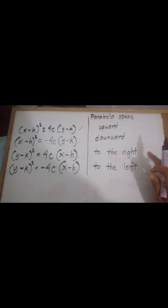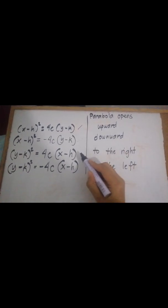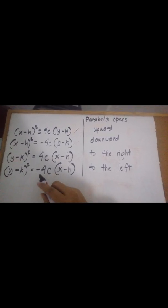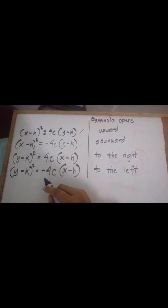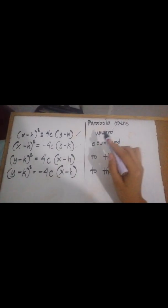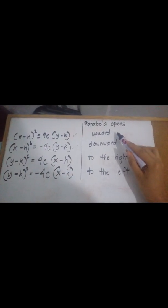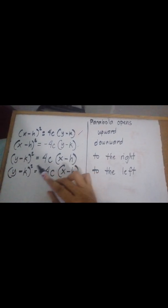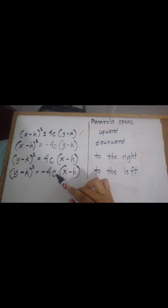If our parabola opens to the right, our equation will look like this: the quantity of y minus k squared is equal to 4c times the quantity of x minus h. And the same for our parabola that opens to the left — the only difference is the negative sign near our 4c. So: x positive means upward, x negative means downward, y positive means to the right, and y negative means to the left.